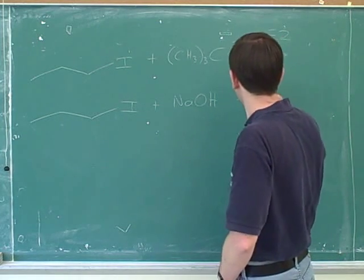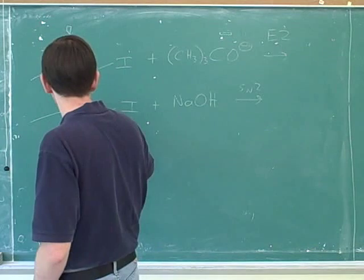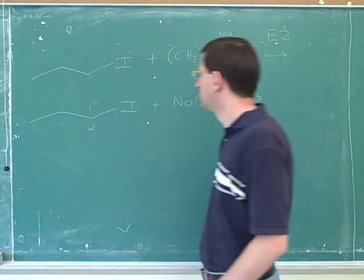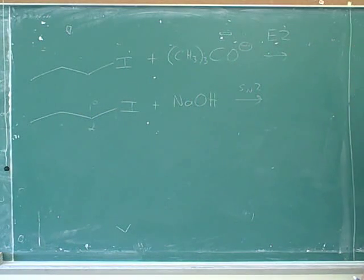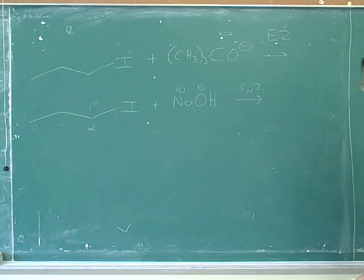Why would this be SN2? Because the alpha carbon's primary, and the O, in this case, the negative oxygen makes a good nucleophile. Is that correct? Yeah, good.